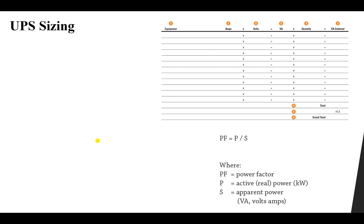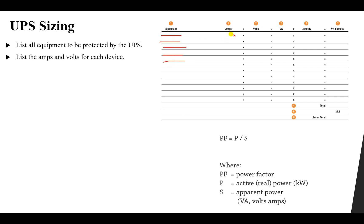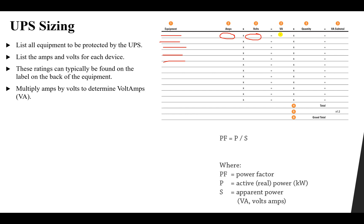Now the important question: how can we size our UPS? The first step is to list all of the equipment that are protected by or receiving power from the UPS. For each piece of equipment we note the amperes and the voltage. Multiplying these two values together gives us the volt-ampere. Our UPS is sized in volt-ampere, so we multiply current by voltage to get the apparent power.